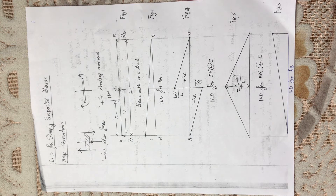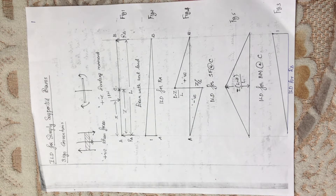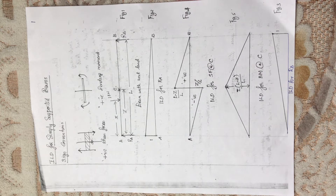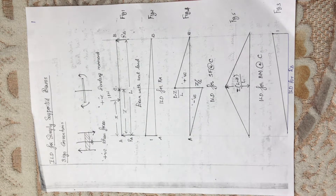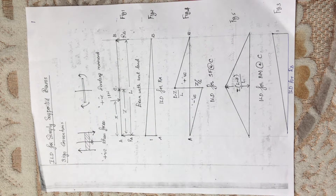We know that there are two types of loads acting on a structure: dead loads and live loads. Dead loads are those which do not change their position during the life of the beam — for example, self weight of the beam, weight of the slab carried by the beam, etc. Loads which can change their position — such as the weight of persons on a slab or beam, or the weight of furniture — are called live loads or moving loads.